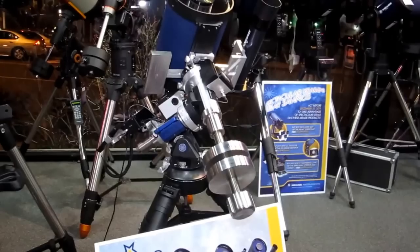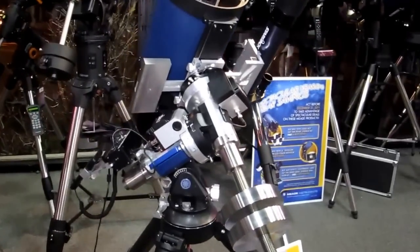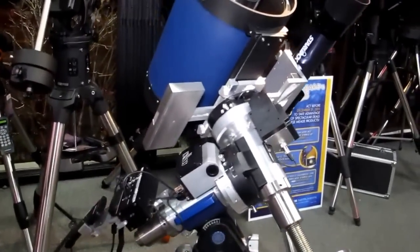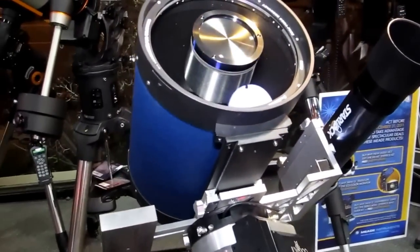It's based around the LX200, so it's got 140,000 objects in the database. It has 5.8-inch gears with 225 teeth.